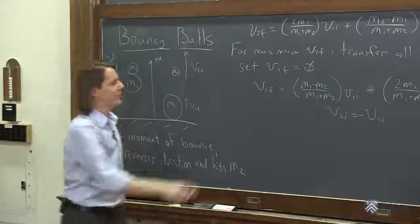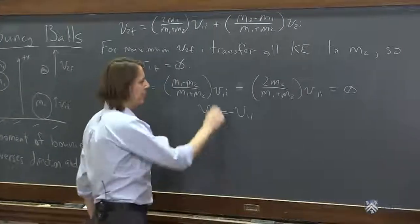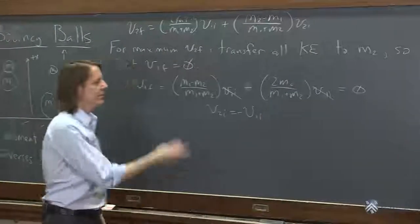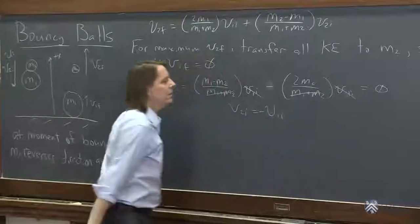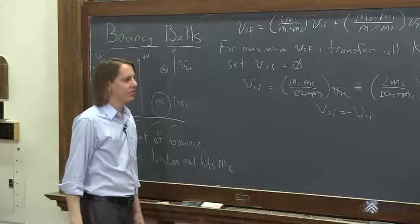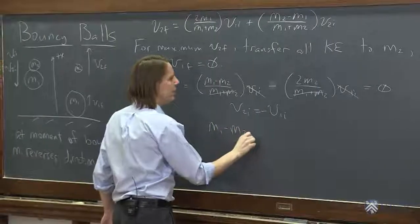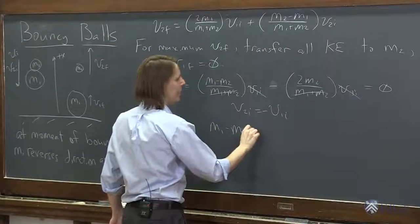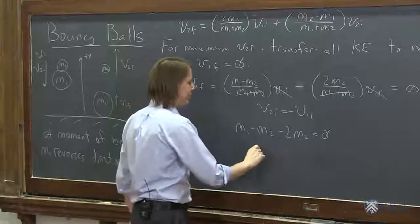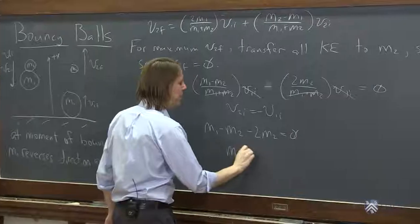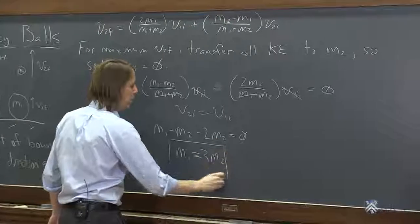So our two conditions: we set it equal to zero and made this true. Now we have all this equal to zero. We can cancel the common terms: V1i, the common denominator M1 plus M2. We can multiply through by M1 plus M2 and cancel all that. Then you end up with M1 minus M2 minus 2M2 equals zero. That's minus 3M2. And you get that if M1 equals 3M2, this will be true.